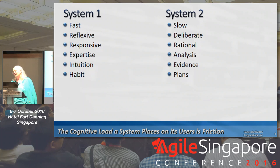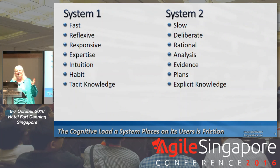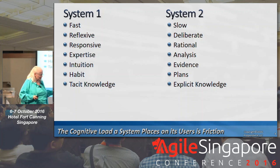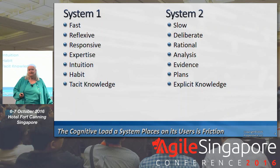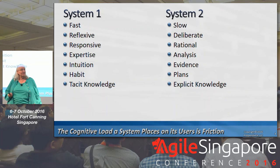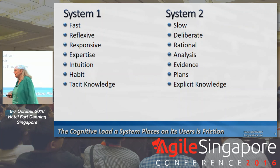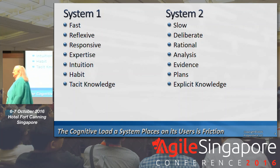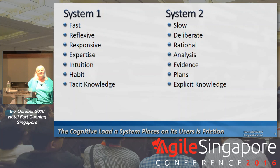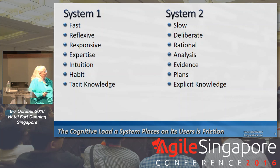System 1 is about habits and System 2 is about plans. System 1 is about tacit knowledge — you kind of know it but can't really tell someone, just like the feeling of balance when learning to ride a bike. You just get it or you don't. System 2 is explicit knowledge — stuff you can write down and give to a child. But reading instructions alone won't teach you to ride a bike.